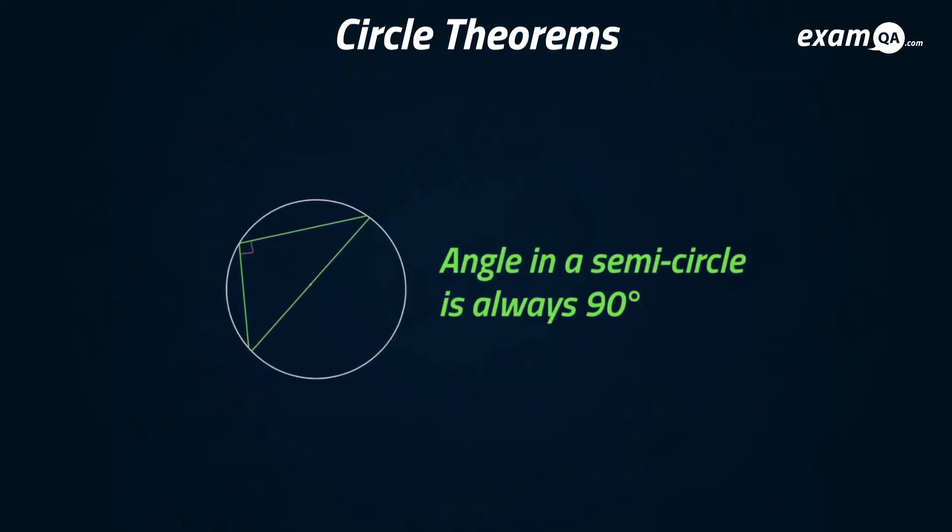The angle in a semicircle is always 90 degrees. What this means is you have to be very careful here—this has to be the diameter for this angle to be 90 degrees.